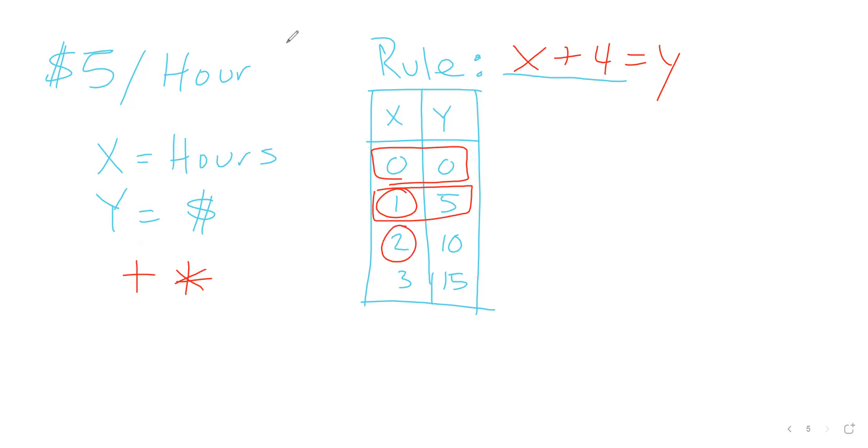And it doesn't. So actually, X plus 4 equals Y is not my rule. My rule is wrong. So since I saw that addition didn't work, then maybe we're multiplying. So I got to think here. Let's see. If I had 1 in place of X times 5 equals 5, that's true. And then over here, if I had 2 times 5, that equals 10. So that works. And then 3 times 5, that equals 15. So that works. So here's actually my rule.